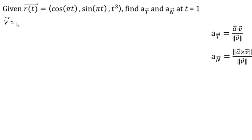So the velocity vector is just the derivative of the position vector. So the derivative of cosine is negative sine pi t, and then we've got a chain rule times pi, which I'm going to pop out in front there. Derivative of sine is cosine pi t. Again, we have a chain rule, so I'm going to pop that cosine in front. And derivative of t cubed is 3t squared.